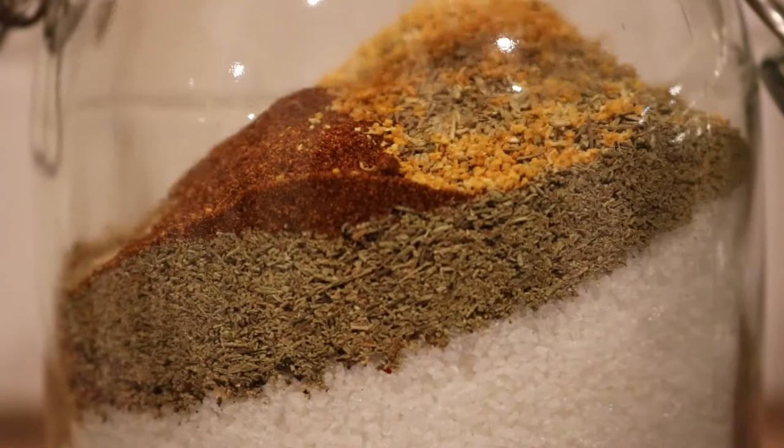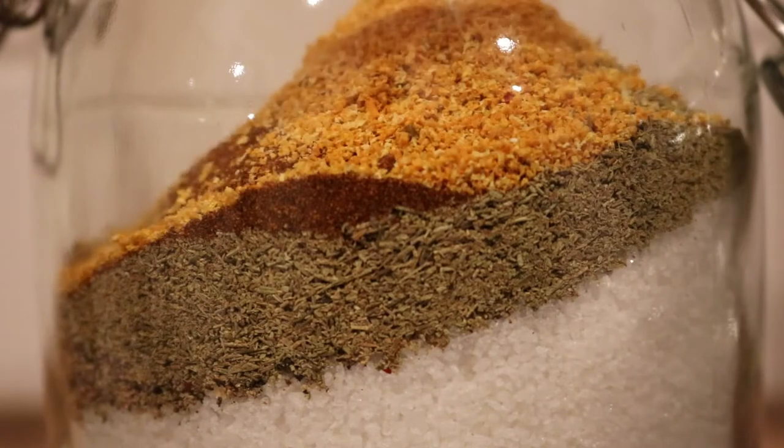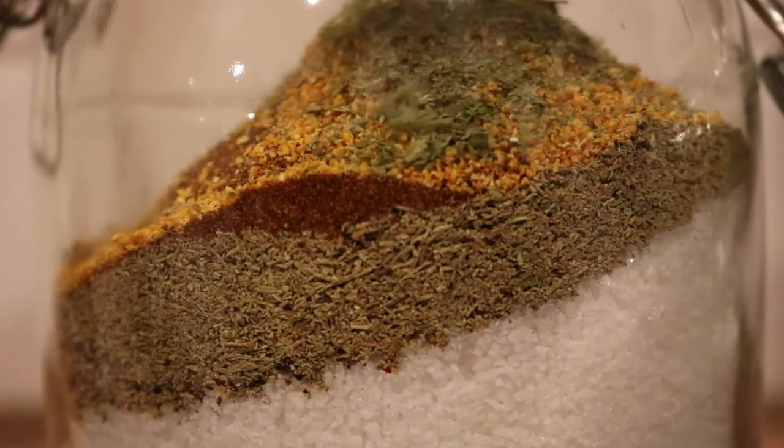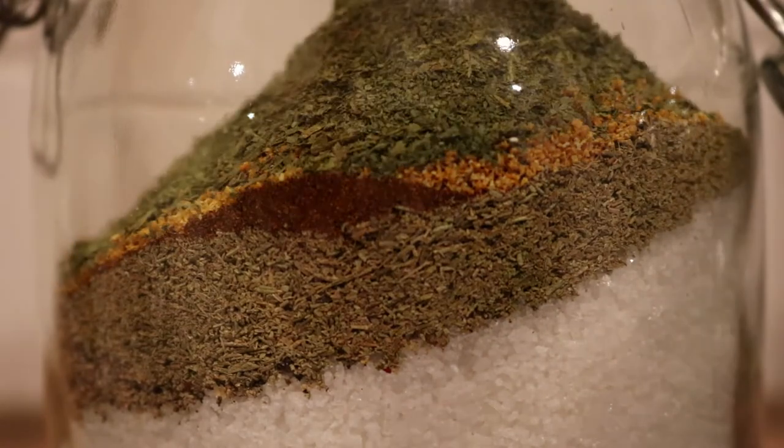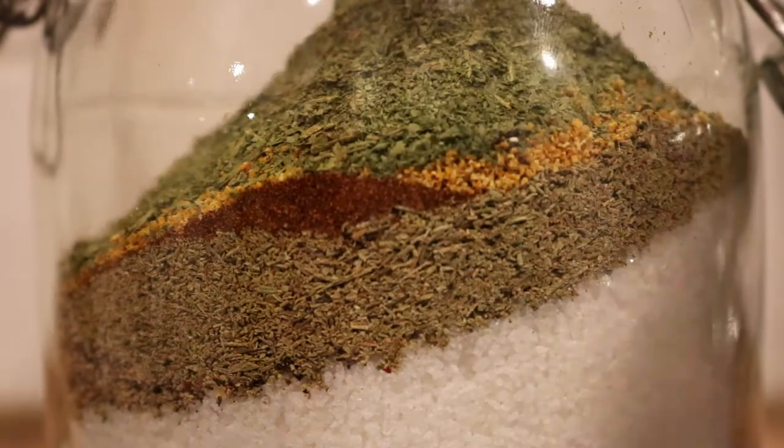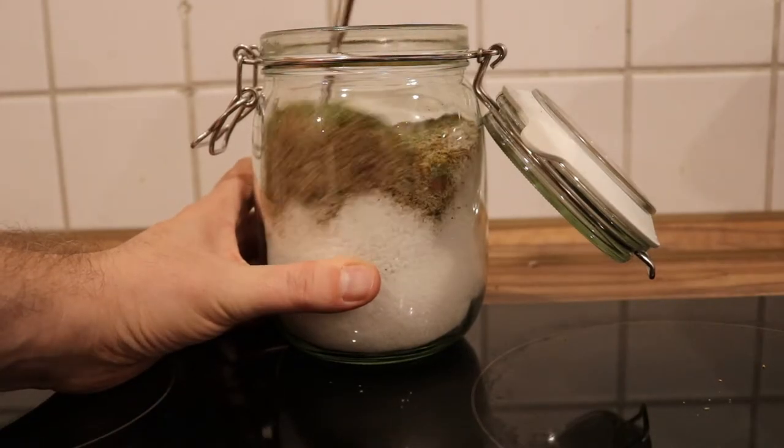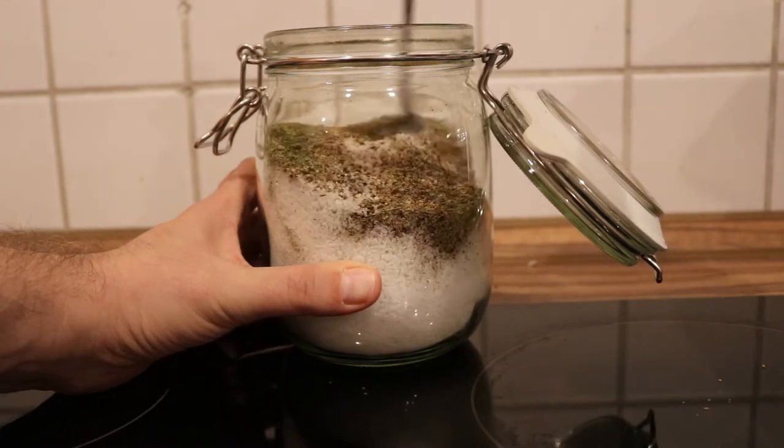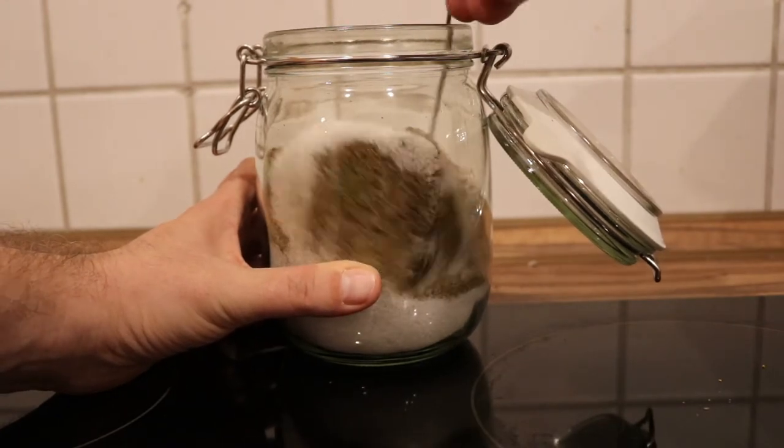Herb salts make great little gifts that are very easy to produce in small and large quantities. The one I made here contains black, white and green pepper, dried rosemary, cayenne pepper, dried lemon and orange peel and some dried wild garlic. You can find the exact composition down in the video description.